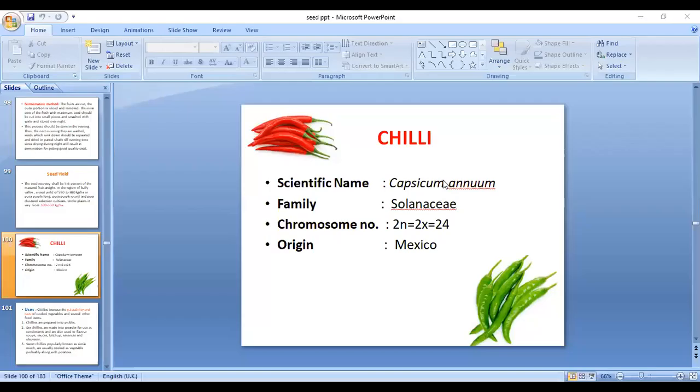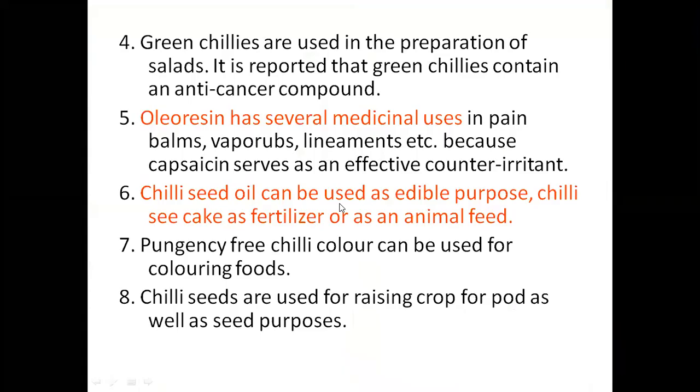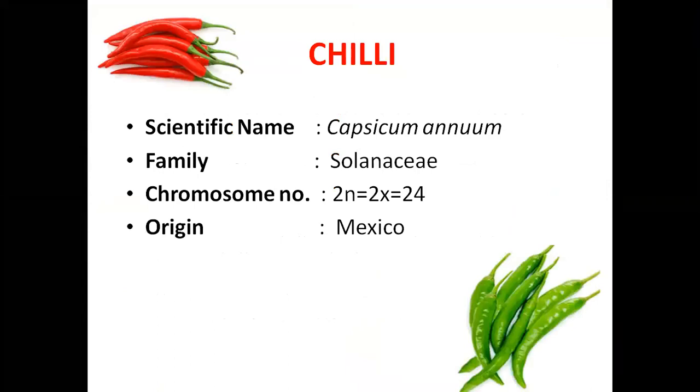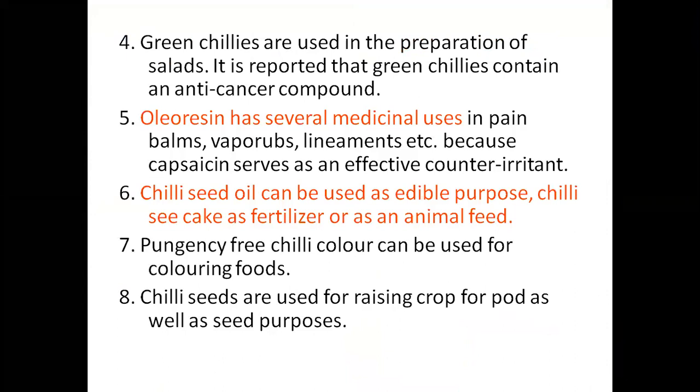Coming to chili: it is Capsicum annuum, family Solanaceae, with Mexico as the origin, 2n = 24. All your horizons have medicinal properties. Chili seed oil is also extracted, which is edible and used in making fertilizers and cakes for animal feed.